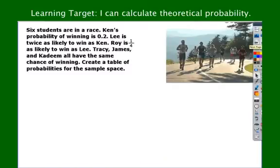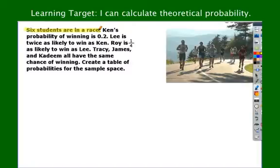This next one is where we start integrating algebra into probability. Read this question carefully. Six students in a race. Ken's probability of winning is 0.2. Lee is twice as likely to win as Ken. Roy is one-fourth as likely to win as Lee. So you've got three important bullets of information that help you figure out Ken, Lee, and Roy.